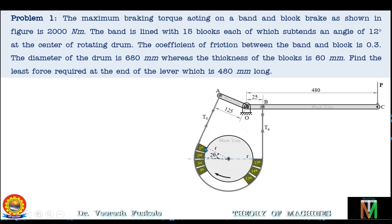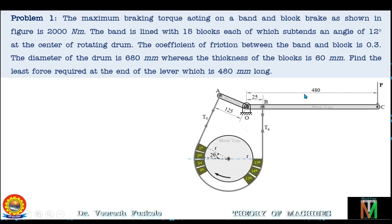This configuration of the band and block brake has 15 blocks. The distance of end A from the fulcrum is 125 mm and the distance of end B from the fulcrum is 25 mm. The length of the lever is 480 mm, and the distance at which the force P is applied from the fulcrum is 480 mm. Now let's proceed with the solution.